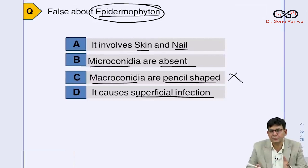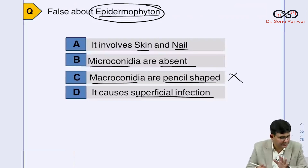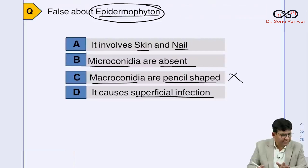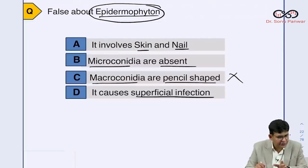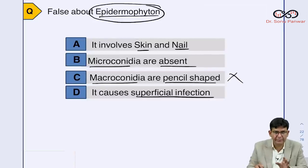Dermatophytosis is a cause of superficial mycoses, so it causes superficial infection — that is true. The answer to this particular question is C. Answer is C for Calcutta.